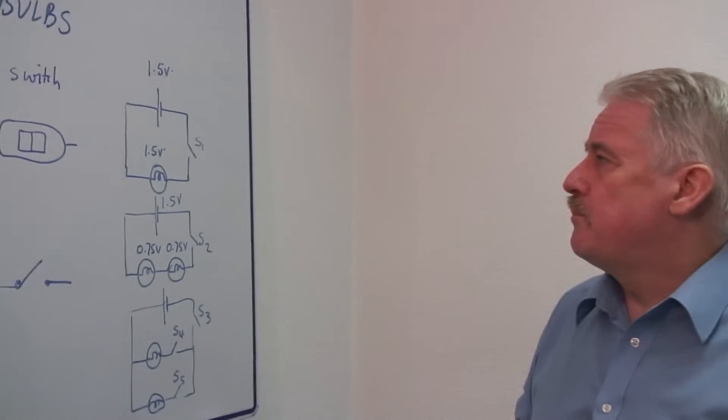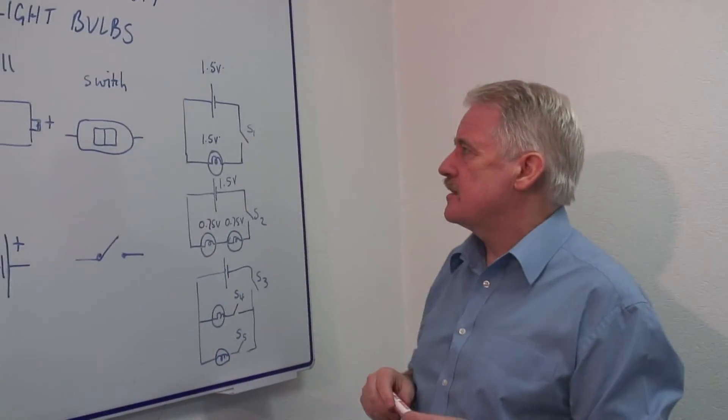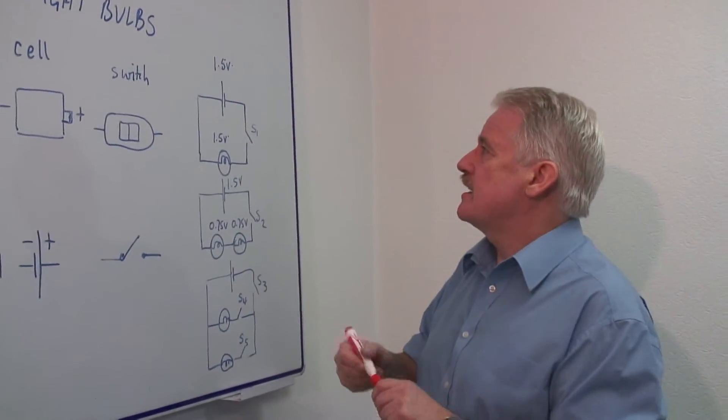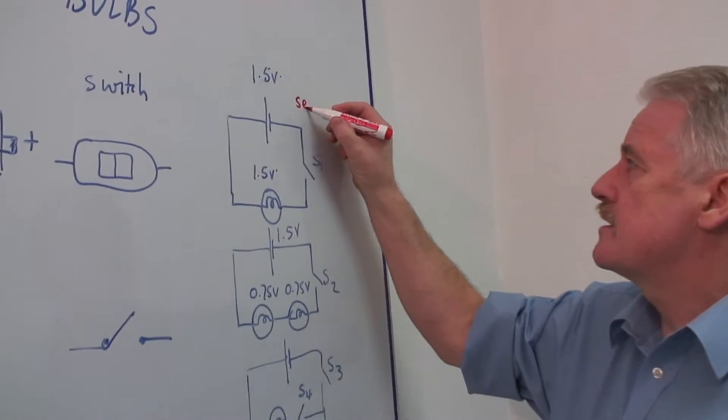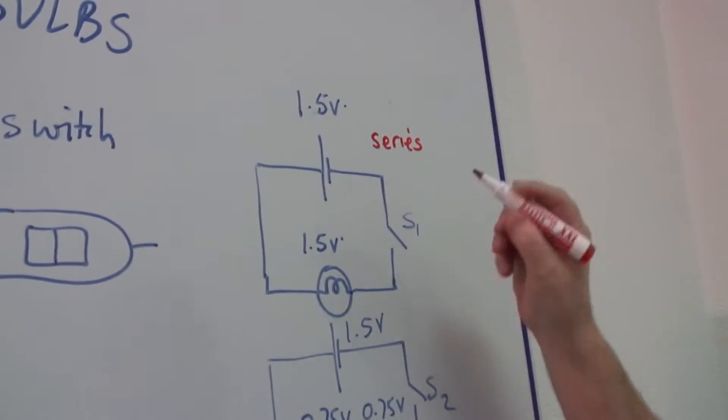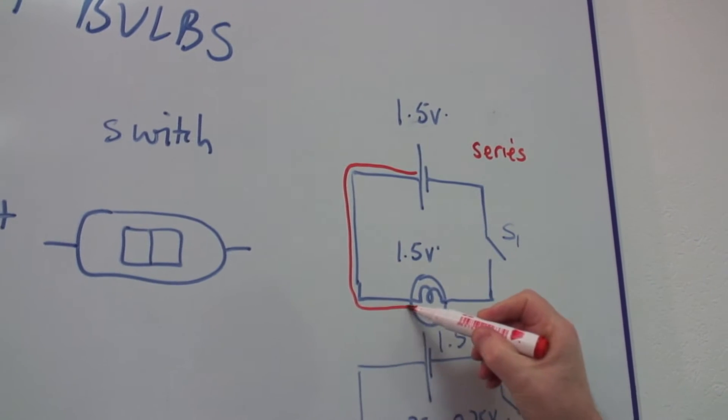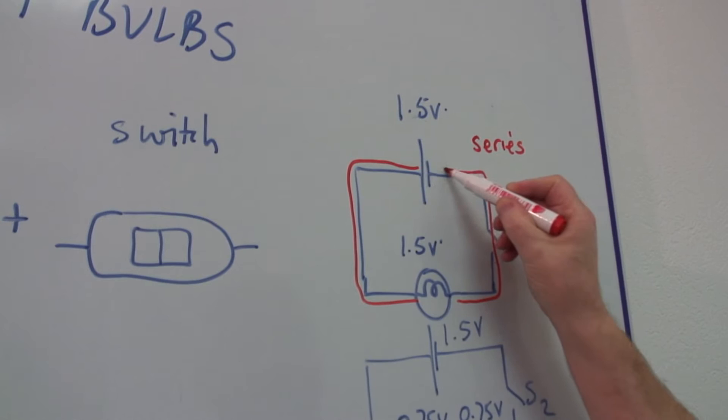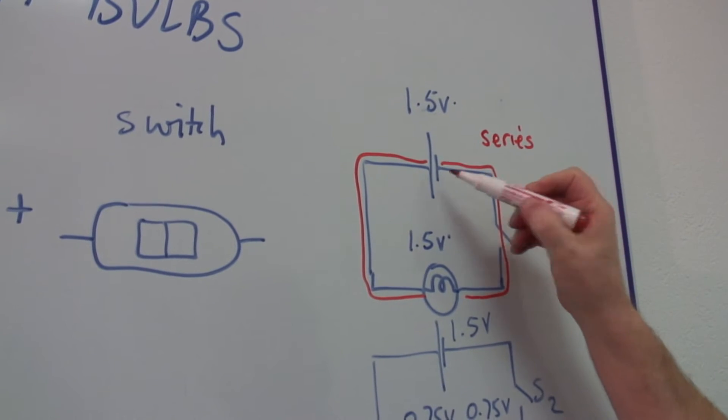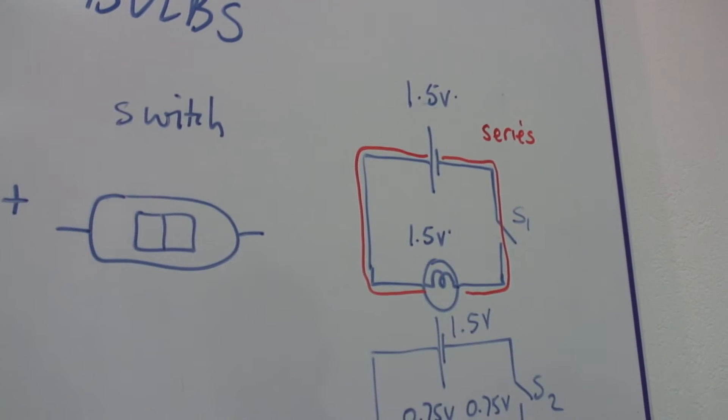So when we put together a simple circuit, this is a simple series circuit. Series indicates that the electricity goes once through every component. So you can see it just goes once around here. I have a switch, I have a cell, and I have a bulb.